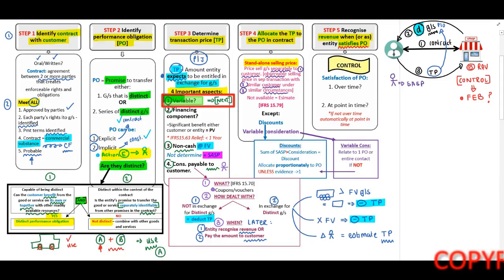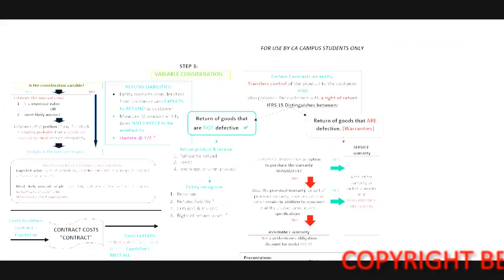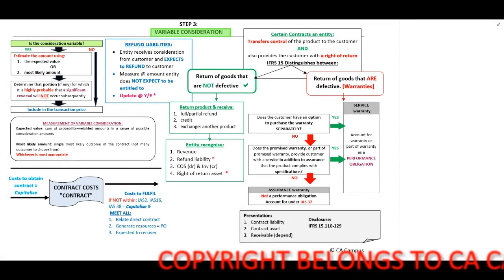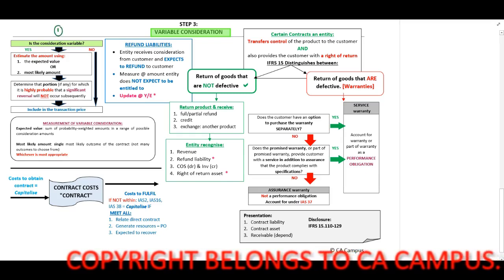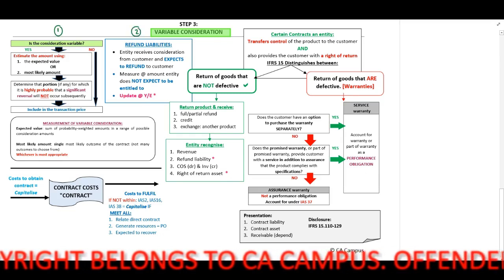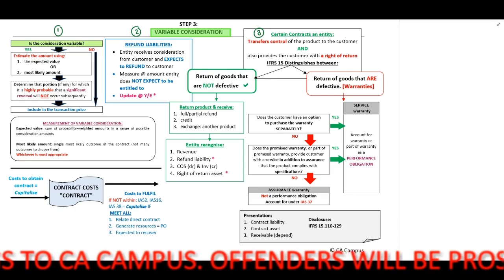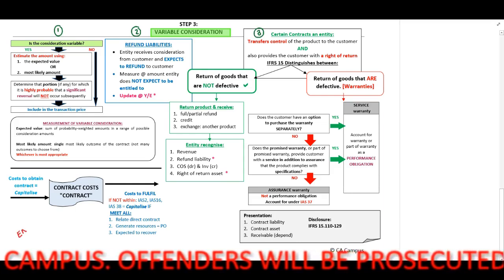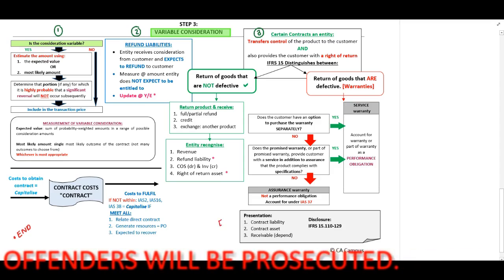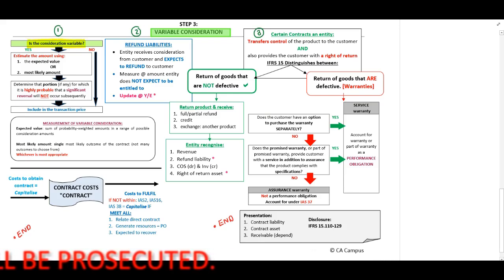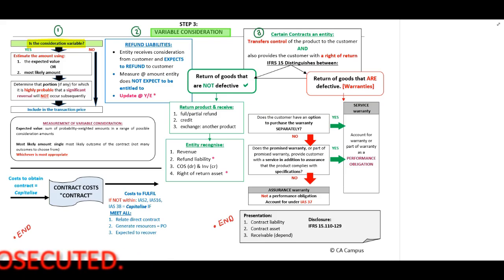We will now look at our variable consideration component. The flow of our discussion will be to first discuss whether this is a variable consideration, then we will look at our refund liabilities, and then we will look at certain contracts. The contract costs we will touch on at the end. Now, the question is: is the consideration variable? If yes, we will have to estimate the amount to use for our revenue. We can either use the expected value or the most likely amount.